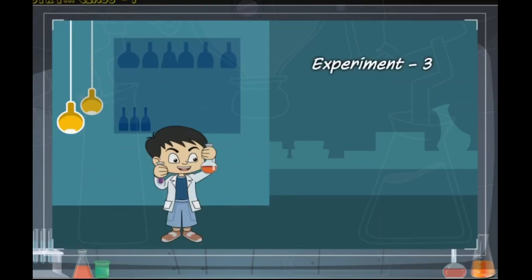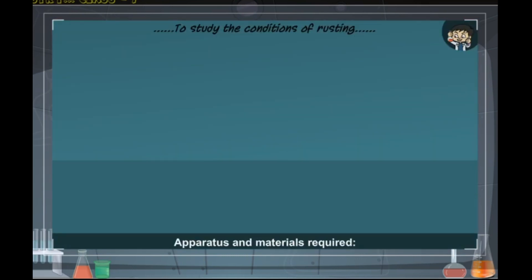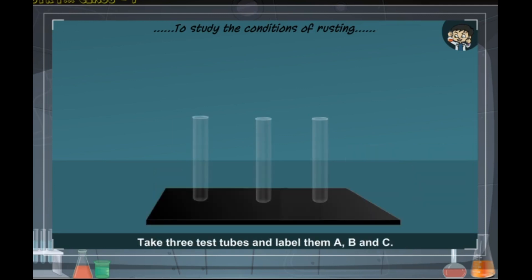Experiment 3: To study the conditions necessary for rusting. Apparatus and materials required: three test tubes, few clean and polished iron nails, tap water, boiled water, anhydrous calcium chloride, rubber stopper, oil, and cotton wool.